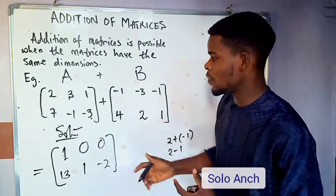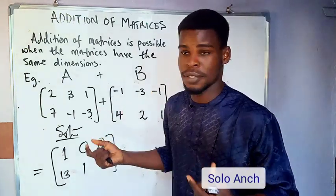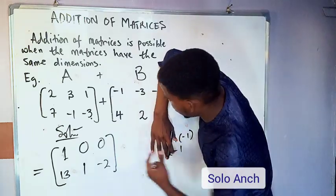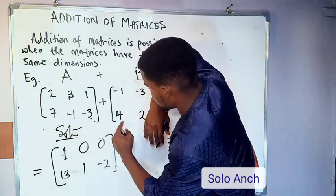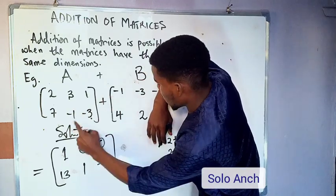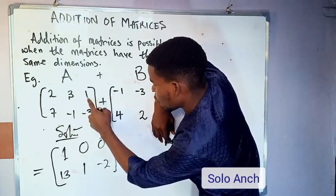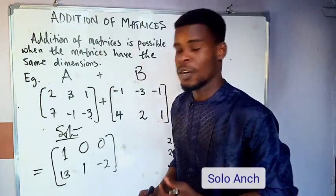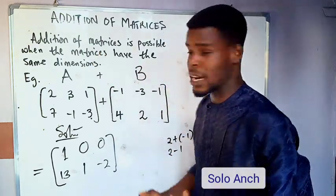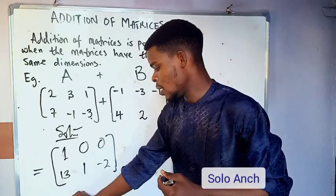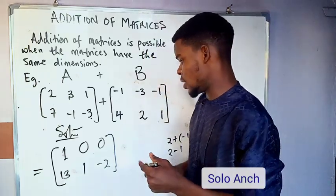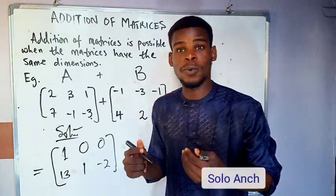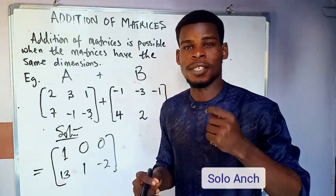This addition would not be possible if the two matrices had different dimensions. For example, if one matrix was missing a column, some entries would have nothing to be added to. So they must have the same dimensions. With this, you can go ahead and add as many matrices as you like. Also, when the number of rows and columns of a matrix are equal, that matrix is called a square matrix.